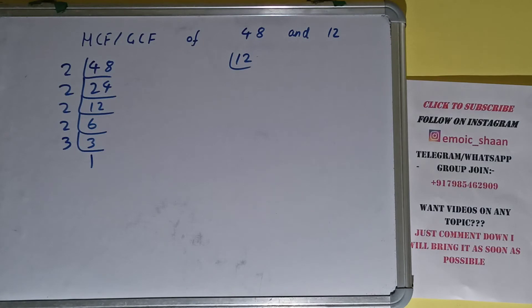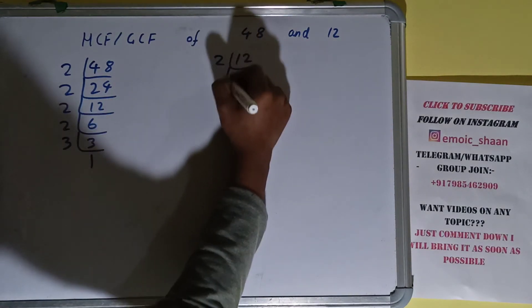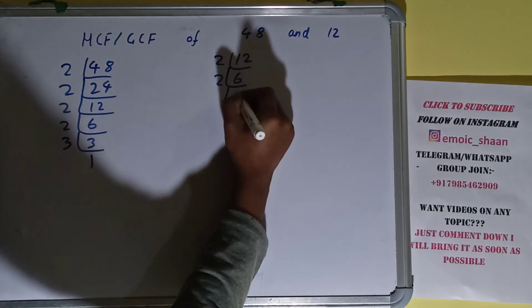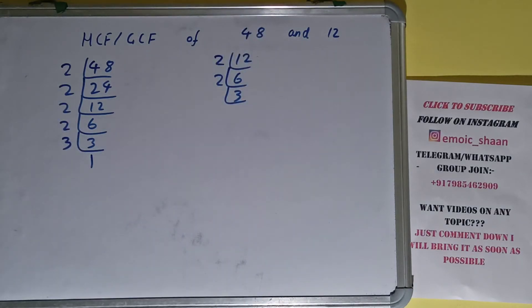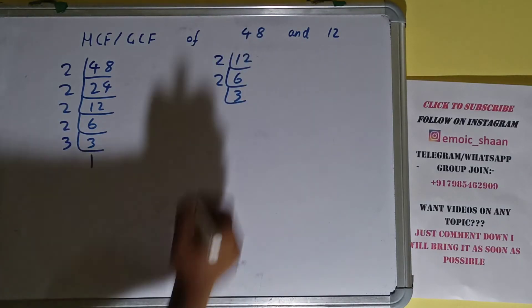Is 12 divisible by 2? Yes it is, and we'll have 6. 6 is again divisible by 2, we'll have 3. Is 3 divisible by 2? No, 3 is a prime number so it is only divisible by itself and we'll have 1.